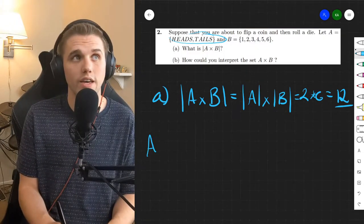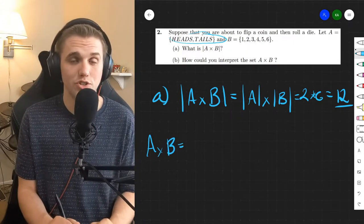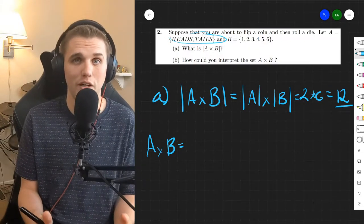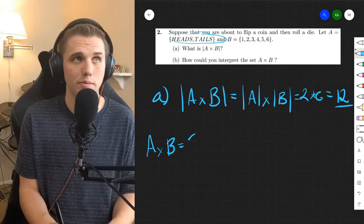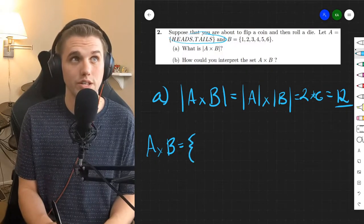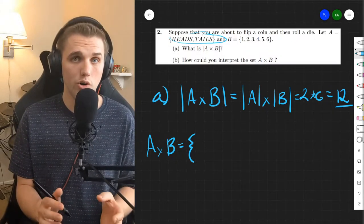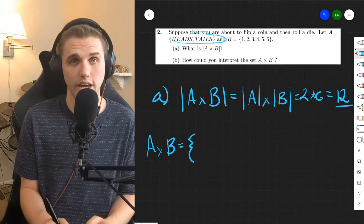The second way is the longer way and that is you have to just create the set A cross B by hand and then count the number of elements. That's another way of counting these elements. And this is probably the way that the textbook wanted you to do this. So the cross product by definition is the set of all ordered pairs where the first element is from the first set and the second element is from the second set.